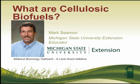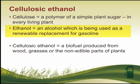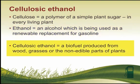While the future may contain several biofuel types, the most practical use of cellulose as a biofuel feedstock is for cellulosic ethanol. Cellulose is a polymer of a simple plant sugar which is found in every living plant. Ethanol, at least in this case, is an alcohol which is being used as a renewable replacement for gasoline. One general definition of cellulosic ethanol is a biofuel produced from wood, grasses, or the non-edible parts of plants.